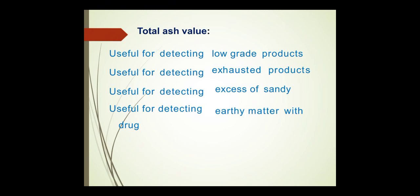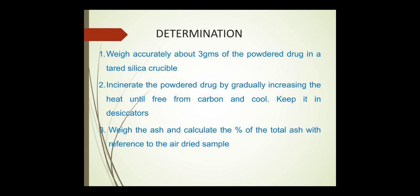Total ash value is useful for detecting low-grade products, exhausted products, excess of sandy matter, and earthy matter present with the drug. To determine it, weigh accurately about 3 grams of powdered drug in a tarred silica crucible. Incinerate by gradually increasing the heat until free from carbon, cool in a desiccator, weigh the ash, and calculate the percentage of total ash with reference to the air-dried sample.